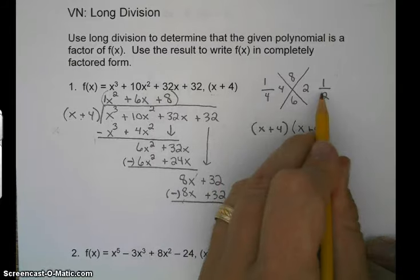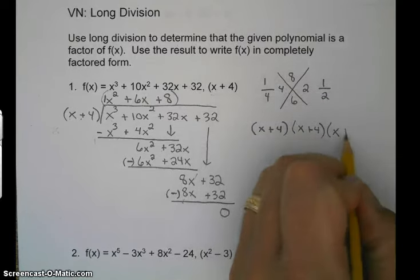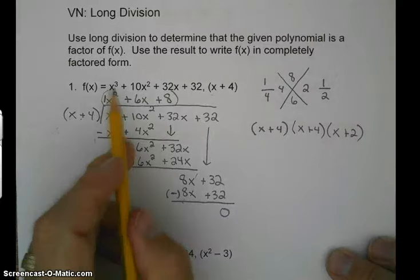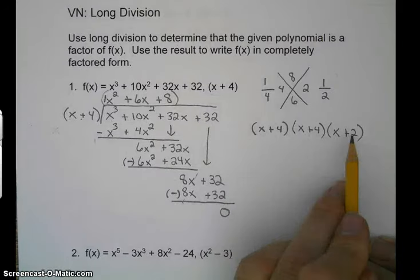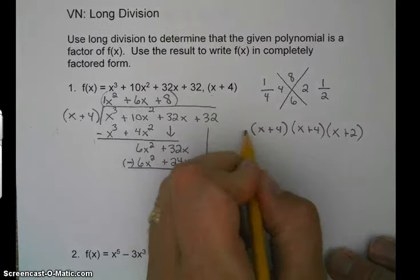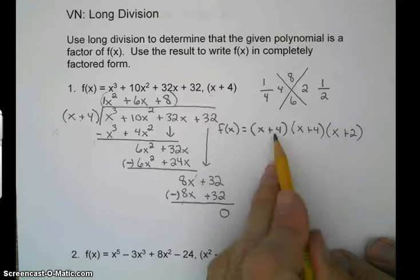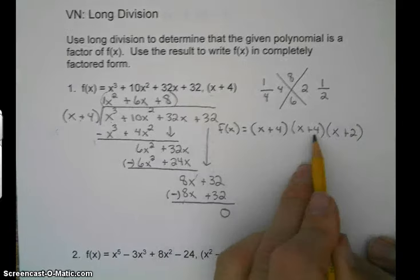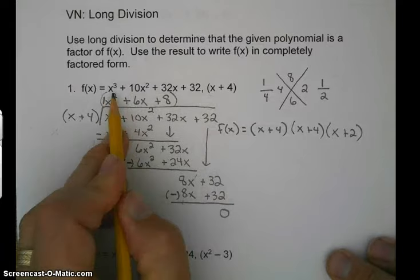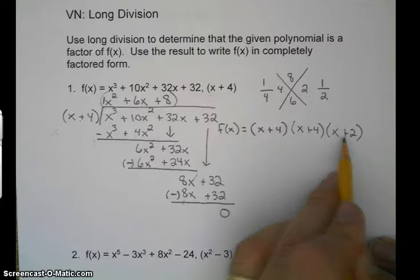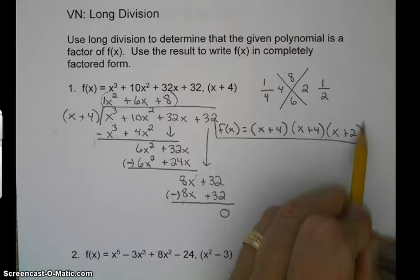And then our third factor is x plus 2. Now remember, I said the degree of this polynomial is 3. So notice there's 1, 2, 3 factors. Now we're in factored form. Remember, in quadratics, factored form looks like this, except there was just 2. This would be standard form for a cubic. This would be factored form for a cubic.